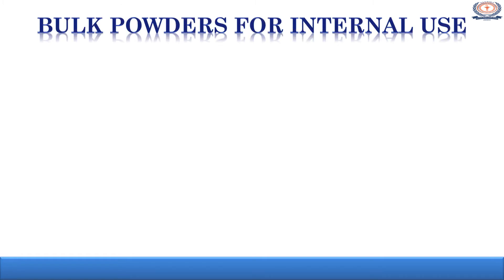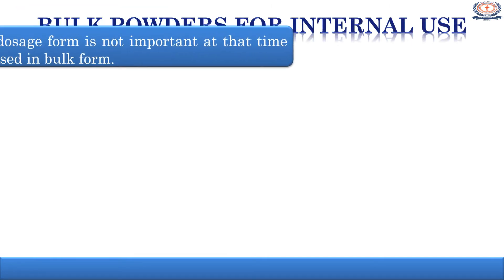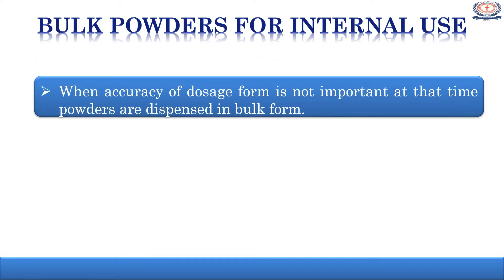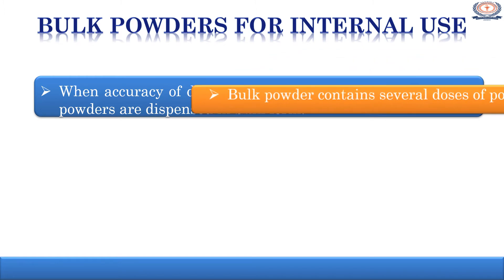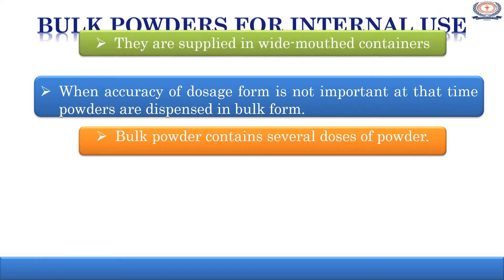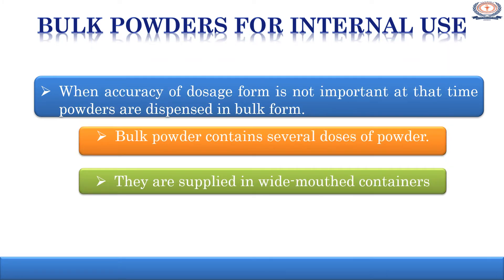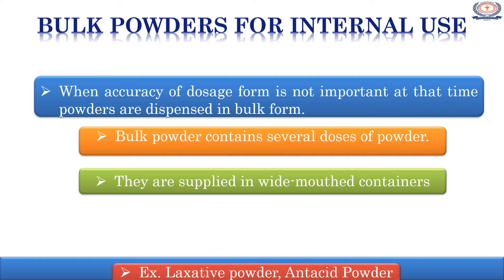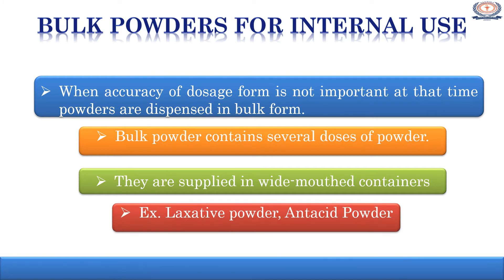The first class is powders for internal use. Bulk powders for internal use are preferred when accuracy of dosage is not important. At that time, powders are dispensed in bulk form. They are supplied in several doses. As they are dispensed as bulk powder, they contain several doses of drug. They are supplied in wide mouth containers which will permit easy removal of a dose. Non-potent substances are supplied in bulk powder form; examples include laxative powder and antacid powder.